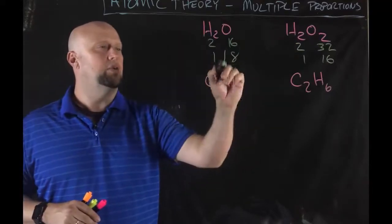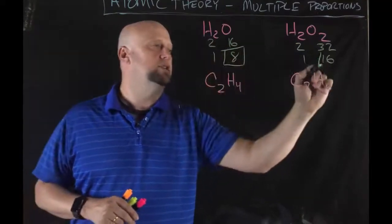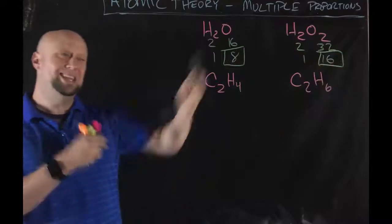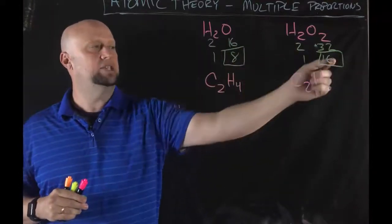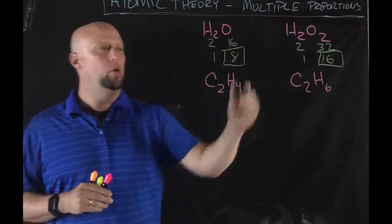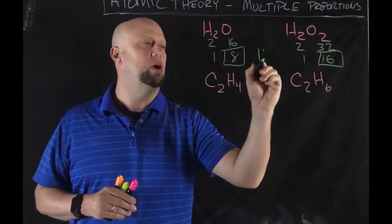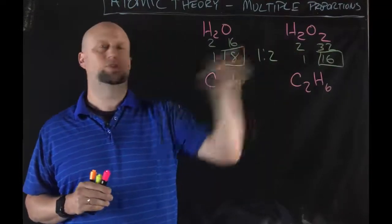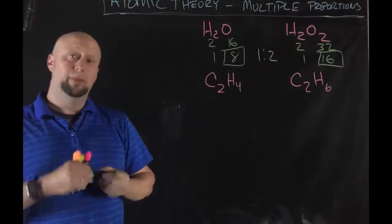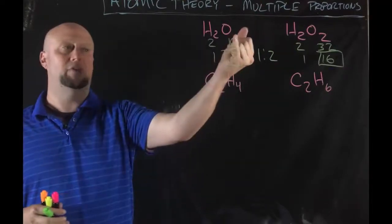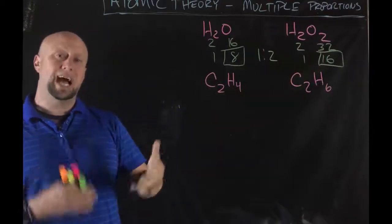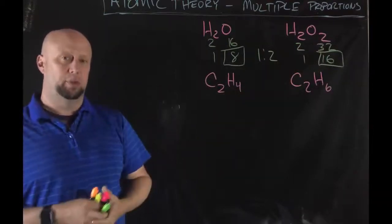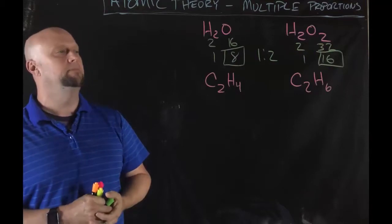Then if we talk about what are the ratios of the oxygens to each other in the different compounds, well that is an 8 to 16 ratio or we could say that's a 1 to 2 ratio between these 2 compounds. That makes really solid sense because I've got 1 oxygen here, I've got 2 oxygens there.